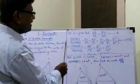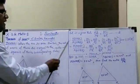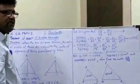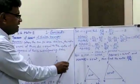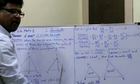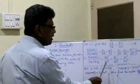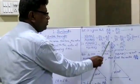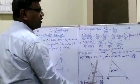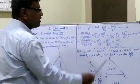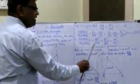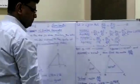That is, area of triangle ABC upon area of triangle PQR equals AB square upon PQ square equals BC square upon QR square equals AC square upon PR square. Hence proved.